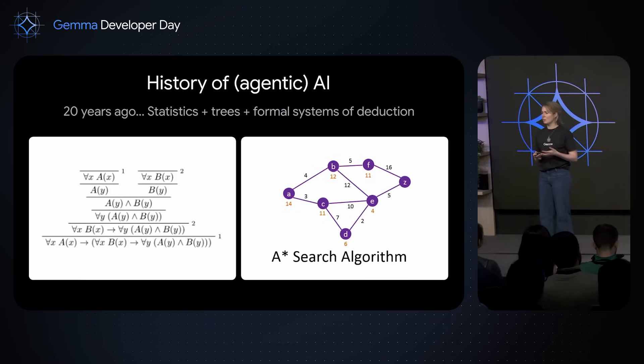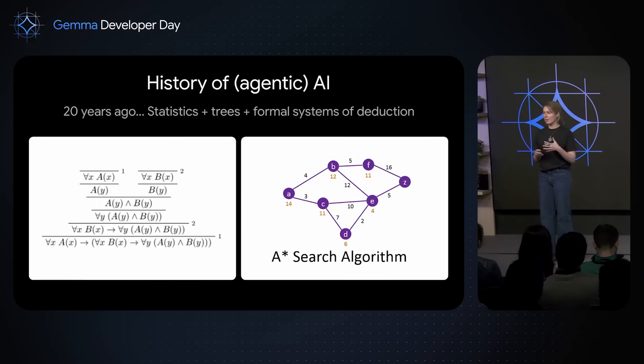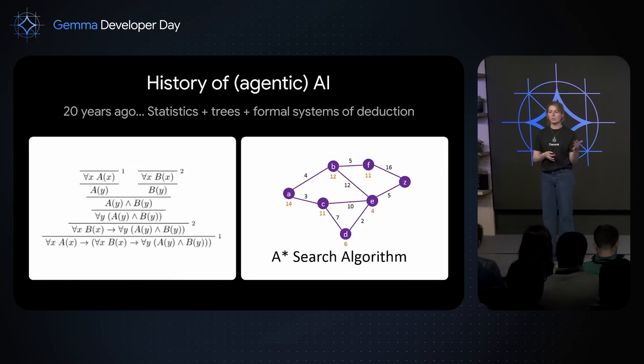These AI systems could only reason using algorithms that we had explicitly specified. In other words, they couldn't learn new capabilities or adapt to new tasks in any way. The formal reasoning of these systems was not equivalent to learning. Computers could only solve problems if we explicitly specified the algorithm they should use. But of course, things have evolved a lot since 20 years ago.